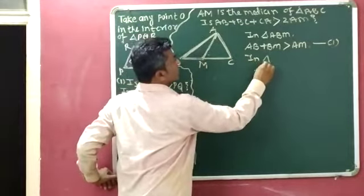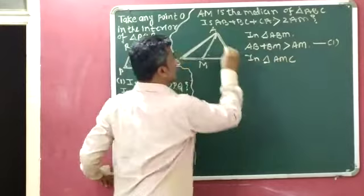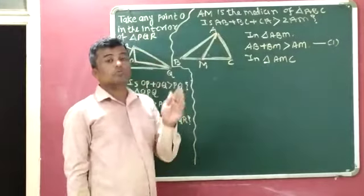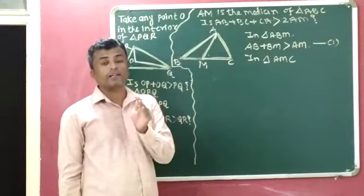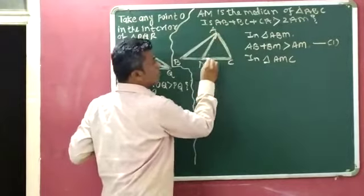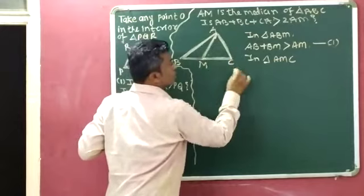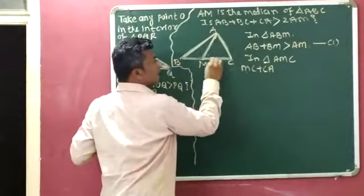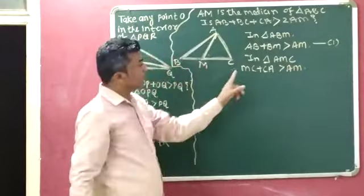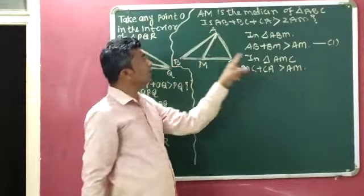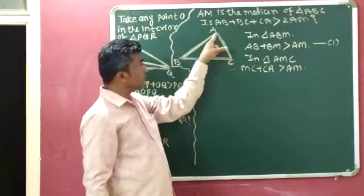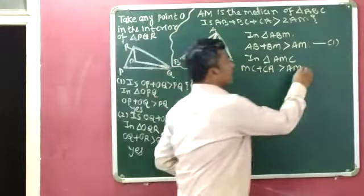Now in triangle AMC, according to the side length property of the triangle, the sum of the length of any two sides is greater than the length of the third side. So MC plus CA is greater than the third side AM. This is equation 2.